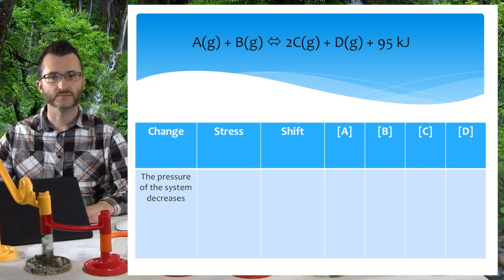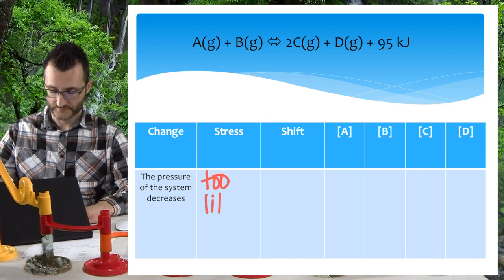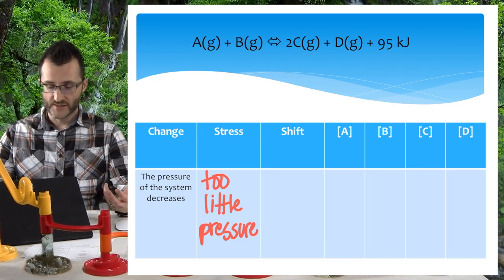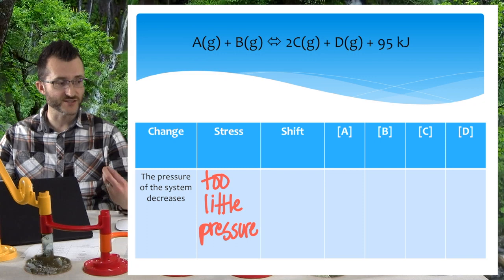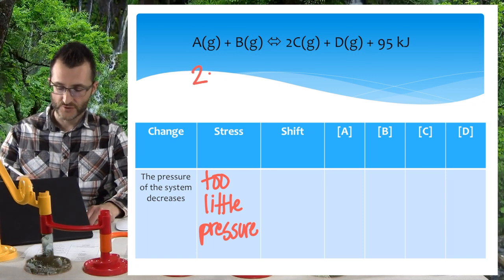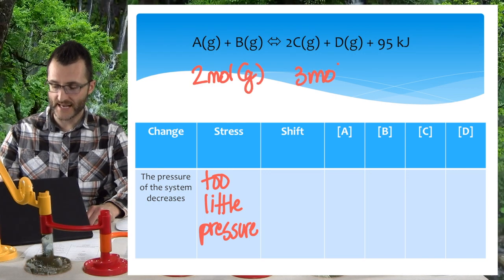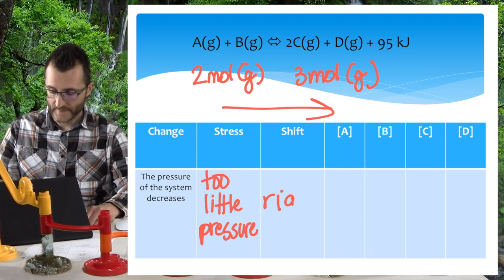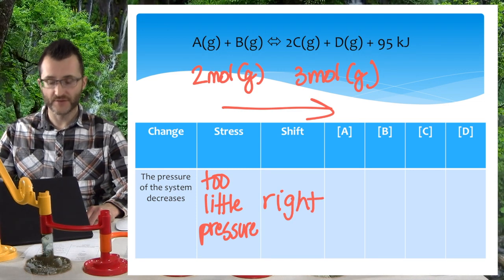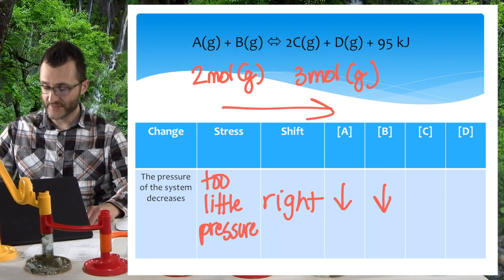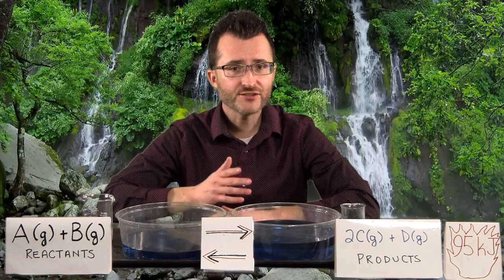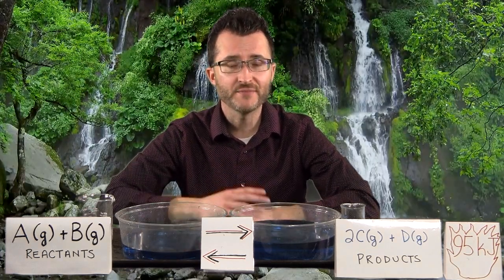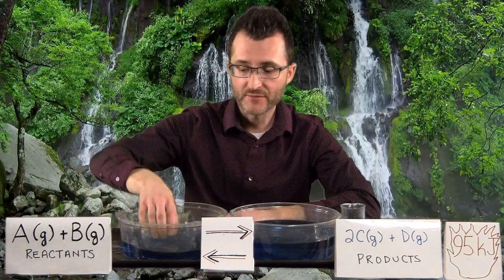This time we have a decrease in the pressure of the system. What's our stress? We have too little pressure — a deficiency. We want to move towards more moles of gas to create more pressure. From before, two moles of gas on the left and three moles of gas on the right, so we shift to the right to make more gas and create more pressure. Moving away from A and B, so they both go down; moving towards C and D, so they both go up. Our stress is a decrease in pressure — we shift to the side that makes more moles of gas to create more pressure. We shift to the right.